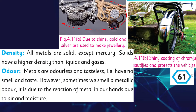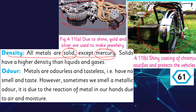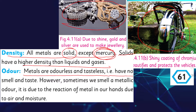You can see gold jewelry here — all metals are shiny. Density: all metals are solid except mercury. Mercury is in liquid form and is found inside thermometers. Solids have a higher density than liquids and gases — particles are more tightly packed in solids, that is why they have a fixed shape.